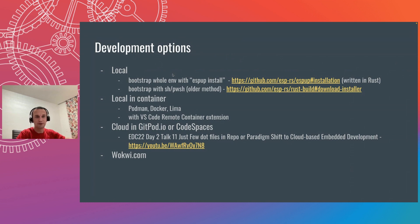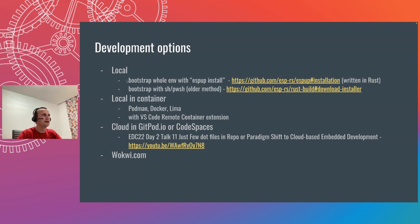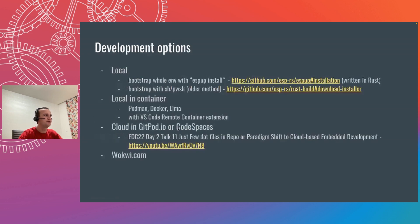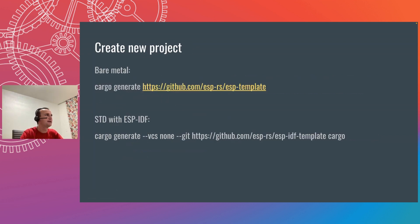For development, there are many options. For local development, there's esp-app-install — a tool for macOS, Linux, and Windows including Mac M1. It bootstraps the entire environment, installs the Rust toolchain, downloads the libclang, and sets everything up. If you prefer developing in a container, there's integration with Podman, Docker, or Lima. There's also cloud development support via Gitpod or GitHub Codespaces. We covered this in a previous talk at the developer conference.